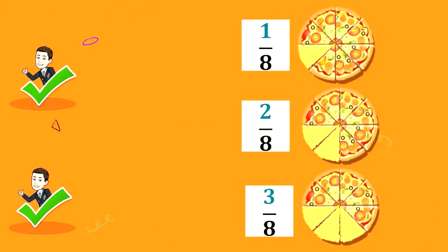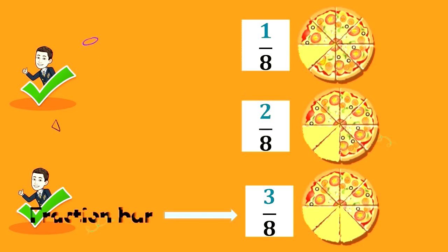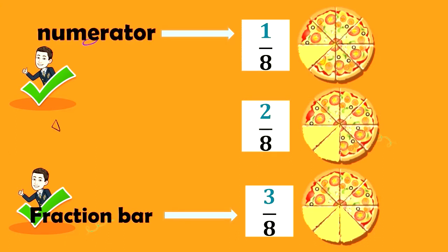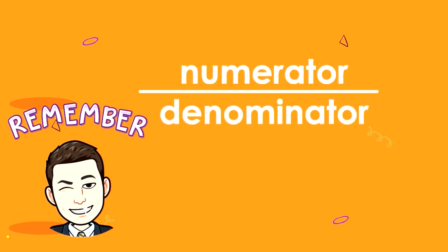Now, let us discuss the parts of a fraction. The line that separates the numerator and the denominator in a fraction is called the fraction bar. The number above the fraction bar is the numerator, and the number below the fraction bar is the denominator. Thus, let us remember that the simplest form of a fraction is simply a numerator divided by a denominator.